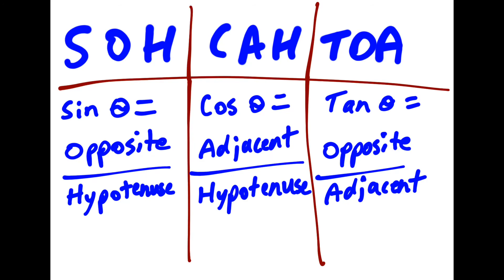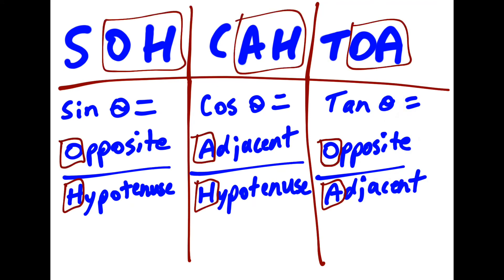So we use this mnemonic device, SOHCAHTOA. And what that means is that the sine of a given angle, and this is the Greek symbol for theta, is equal to the opposite side length divided by the hypotenuse side length. Or the cosine of an angle is equal to the adjacent side length divided by the hypotenuse side length. The tangent of an angle is equal to the opposite side length divided by the adjacent side length. And if you are paying attention, OH matters, because that tells you which goes on top and which goes on bottom, and which side length we're using, adjacent hypotenuse or opposite and adjacent, and it kind of tells you which shortcut to use, too.